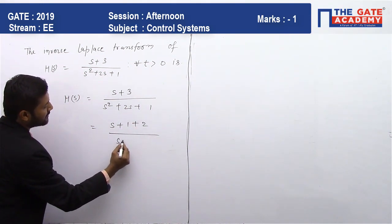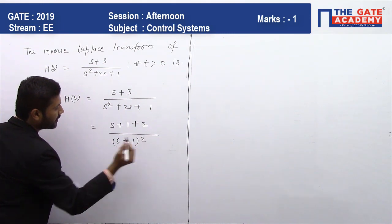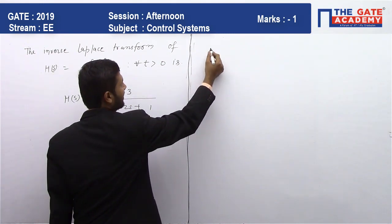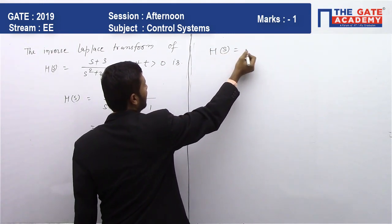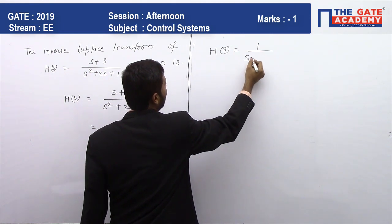So this H(s) can be written as 1/(s+1) + 2/(s+1)².